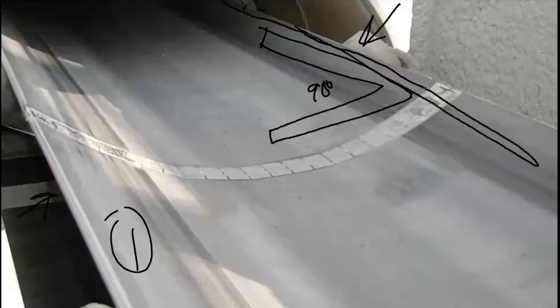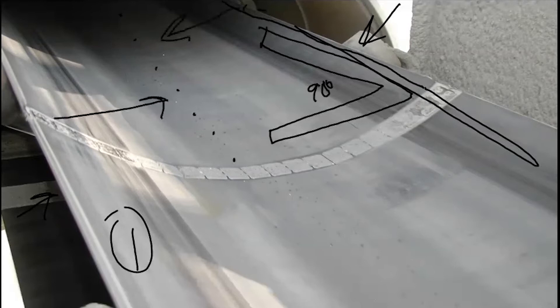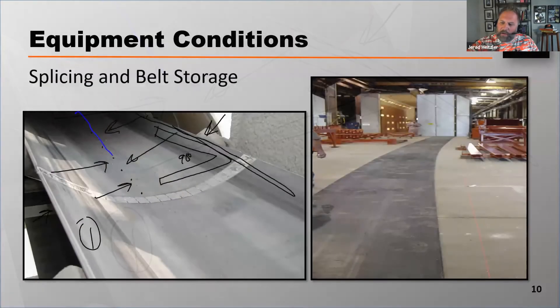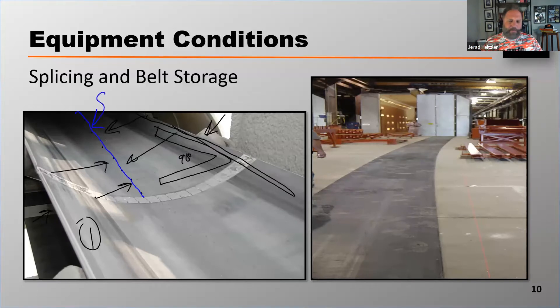What you need to do is create what's called an average center line by measuring half the distance from each side of the belt, striking marks, and then connecting those marks with a chalk line. That gives you your average center line. Square off of that.